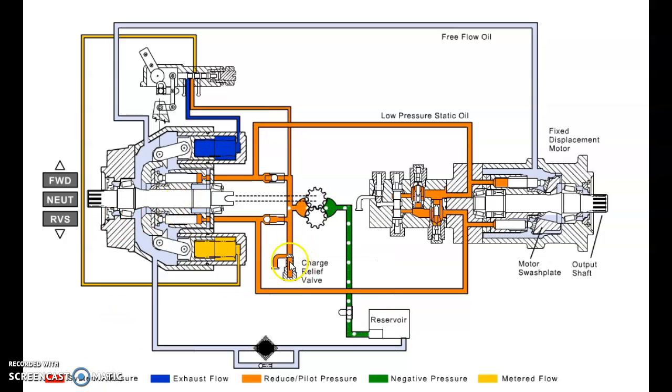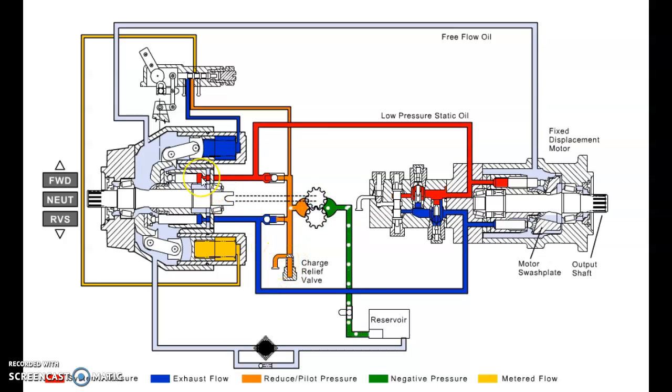In neutral, charge pressure is controlled by the charge relief. Once we go into forward, in this animation they're going to use the top side of the drive loop to indicate that's where oil is flowing in forward. Just changing it up a little bit, but that's fine.